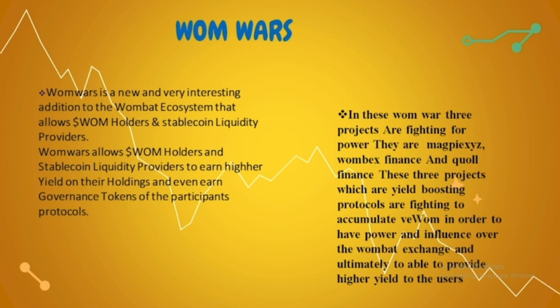Next, what is Womb Wars? It is a new and very interesting addition to the Wombat ecosystem that allows WOMB holders and stable coin liquidity providers to earn higher yield on their holdings and even earn governance tokens of the participating protocols. In Womb Wars, there are three projects fighting for power: Magpie XYZ, Wombex Finance, and Quoll Finance.